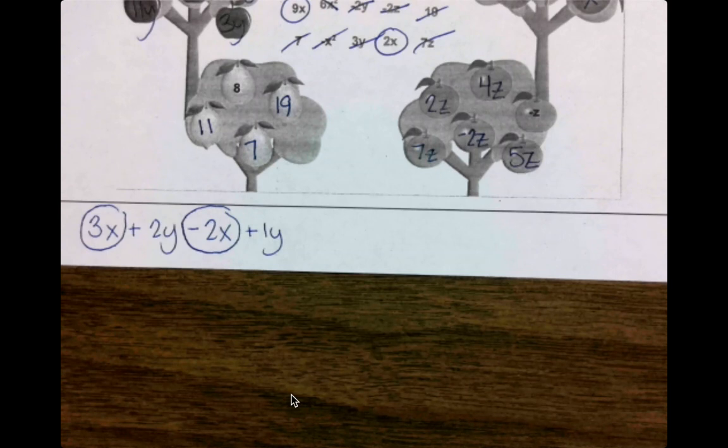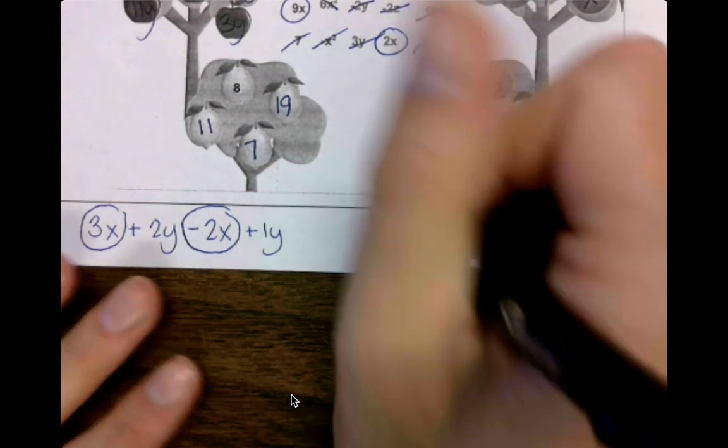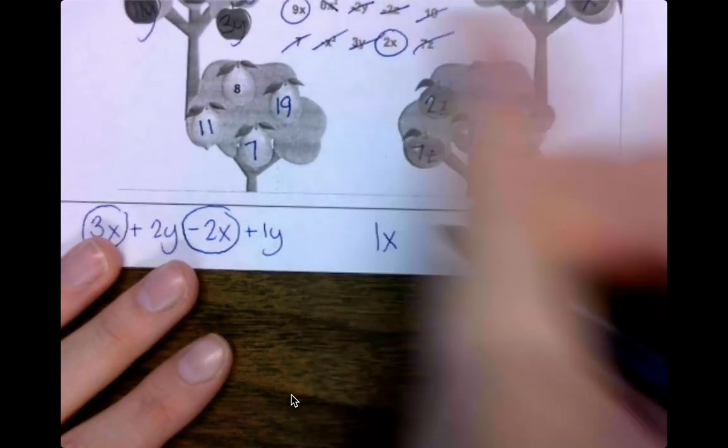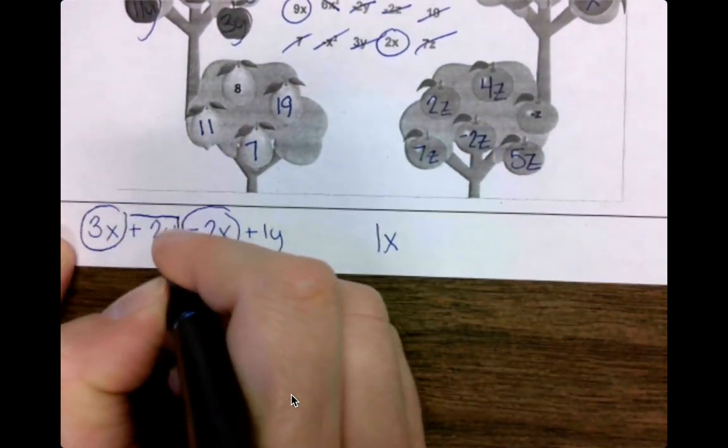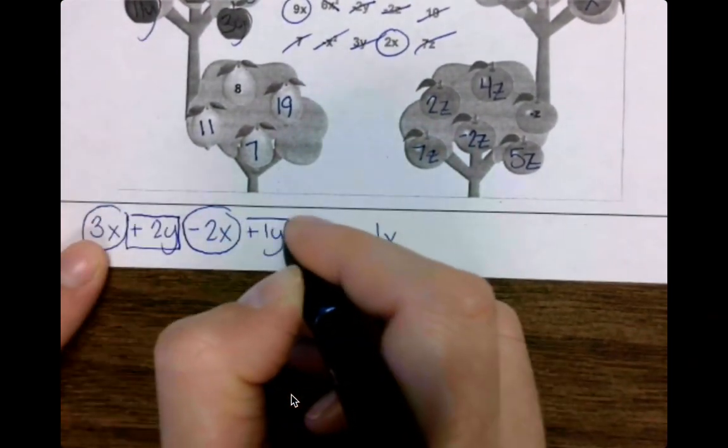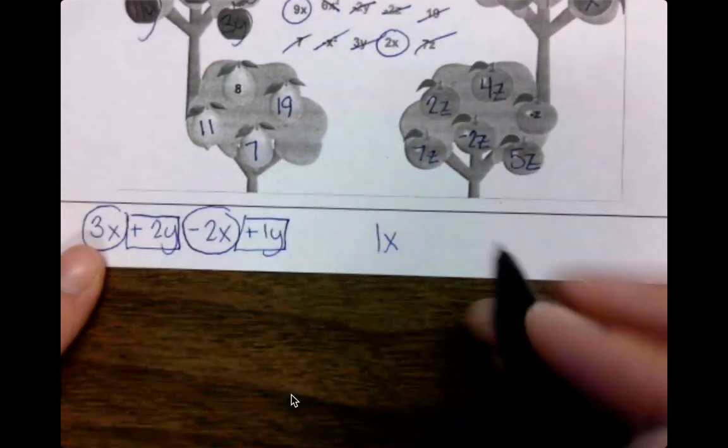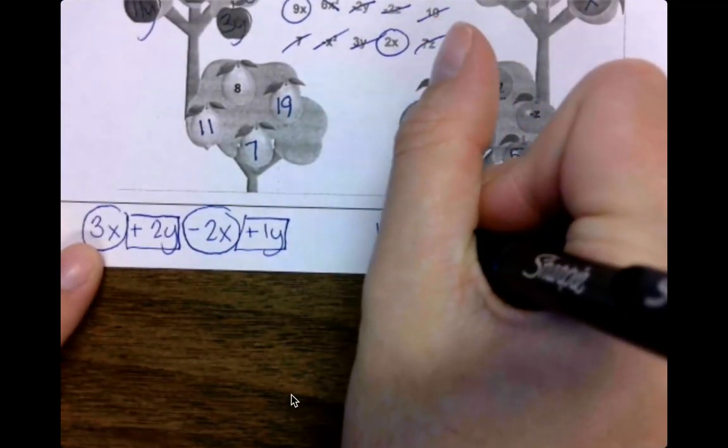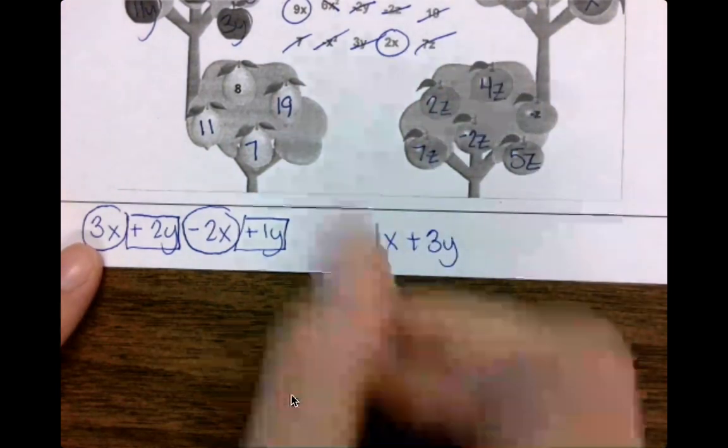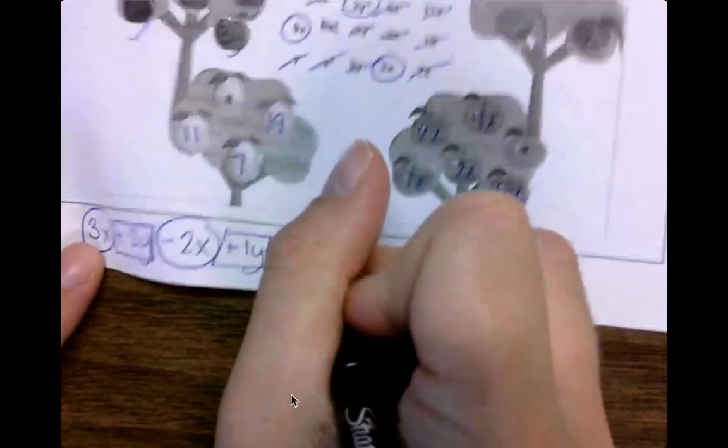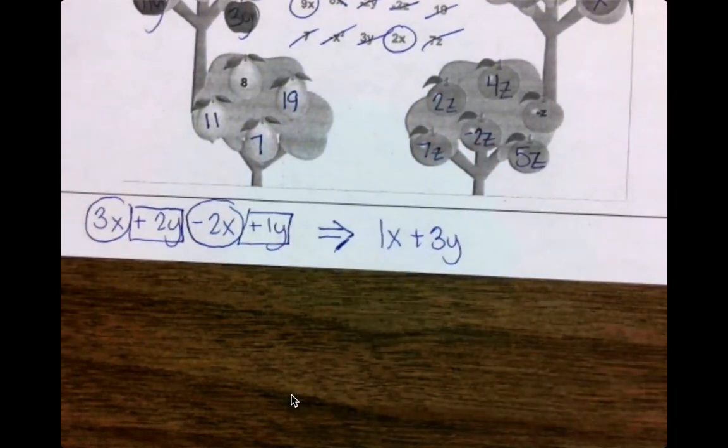So 3x and then you're minusing 2x would give me 1x. Then we have that positive 2y and that positive 1y. Two of these plus another one would be 3y. So if you combine like terms, that's kind of what we're looking at.